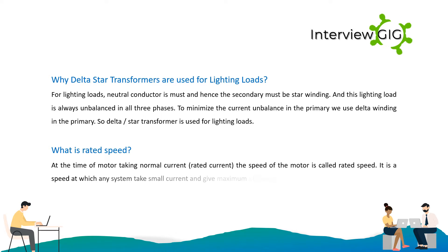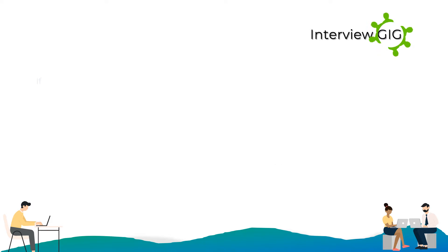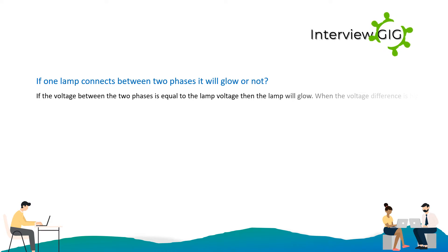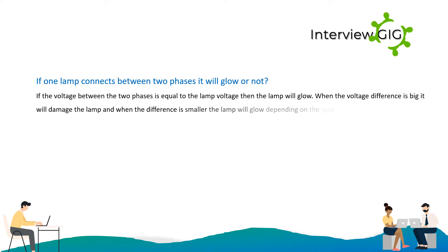If one lamp is connected between two phases, will it glow or not? If the voltage between the two phases is equal to the lamp voltage, then the lamp will glow. When the voltage difference is large it will damage the lamp, and when the difference is smaller the lamp will glow depending on the type of lamp.